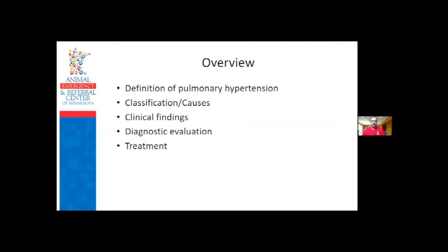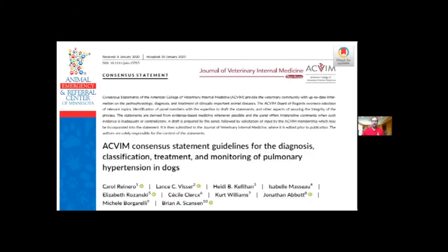We'll start by talking about what pulmonary hypertension is and what it isn't, the classifications and causes of different types, clinical findings ranging from signalment to physical exam and diagnostic imaging, what history you're going to find, the diagnostic evaluation that should be done, and then eventually the different ways to treat. The ACVM earlier this year released a consensus statement on pulmonary hypertension, and this talk is modeled based off their recommendations and that paper.